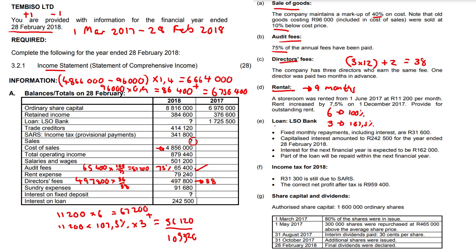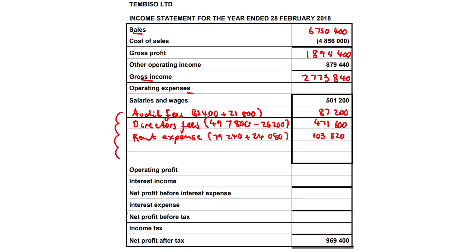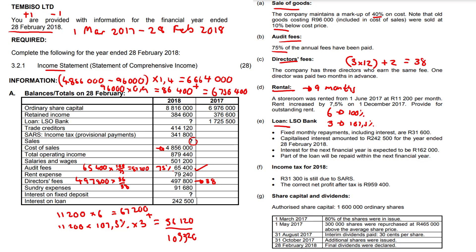The loan calculation will plug into interest expense. Interest expense amounted to 242,500. Income tax still needs to be factored in — that's the 341,800 provisional tax payments plus the 31,300 still owing.